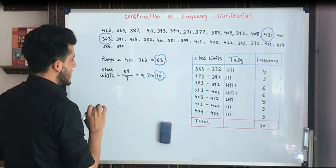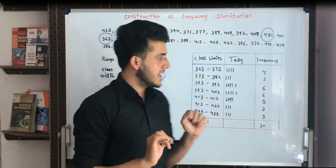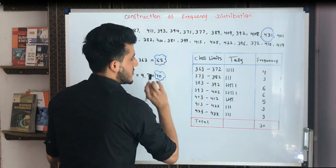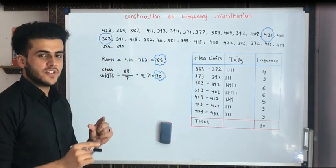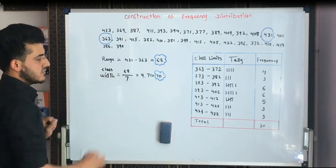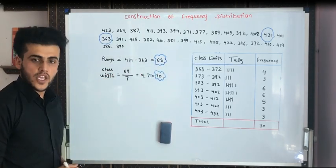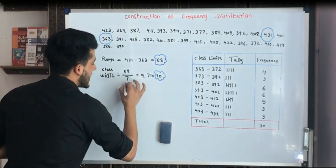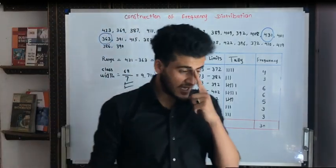Then, what do we do with this 68? We are finding the class width. What is class width? Class width is the range between each interval. Suppose we are having 363 to 372 — the difference is around 10. How do we find that with the help of class width? We found 68 as range. Now, we divide this range by how many classes we want. This is important.